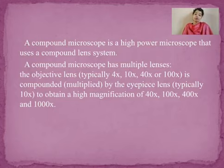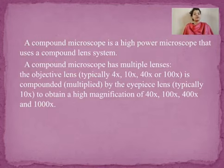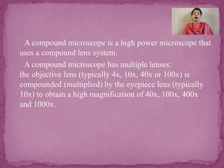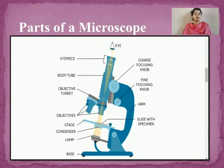In a compound microscope there are four objective lenses: one of 4x power, second of 10x power, third of 40x power, and the last of 100x power. This means the first lens magnifies the object four times, the second lens magnifies the object ten times, and so on. The eyepiece is used to obtain high magnification.